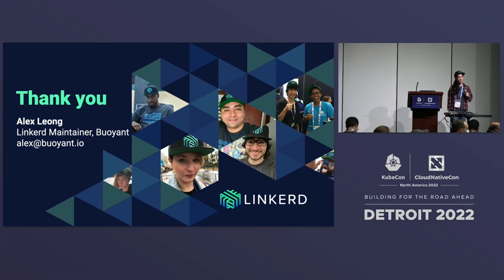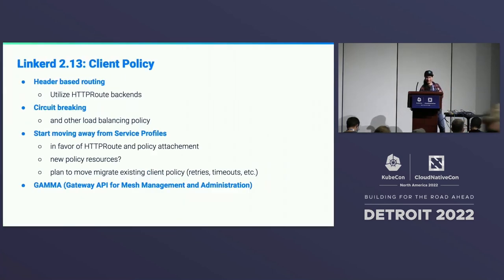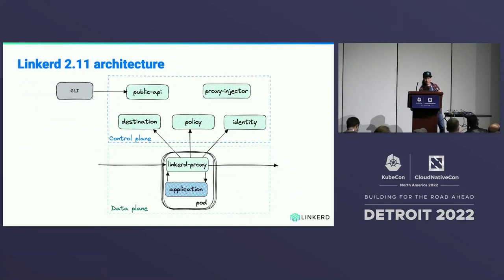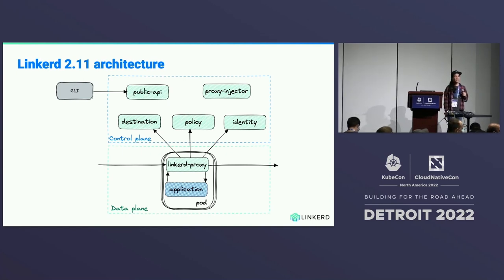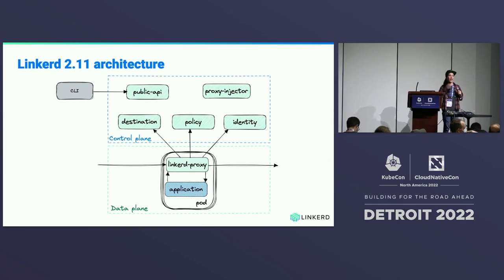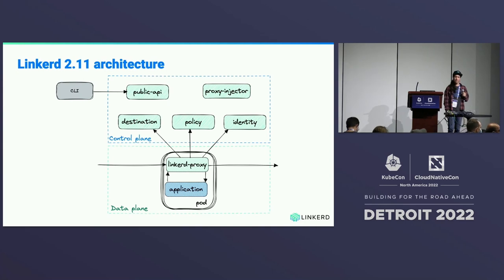Q: You mentioned the control plane was down to three components, but I counted five on the slide. A: The destination and policy controllers are split out in the diagram but bundled together in one pod. The public API doesn't exist anymore, so that's three. The slide is slightly wrong. Q: You mentioned backpressure — does Linkerd provide a backpressure mechanism? A: Yes — we use the HTTP backpressure mechanism. As the proxy handles traffic, it takes bytes in and sends them out, and as soon as it sends them out it signals upstream that it's ready for more, using the natural connection windows of HTTP.